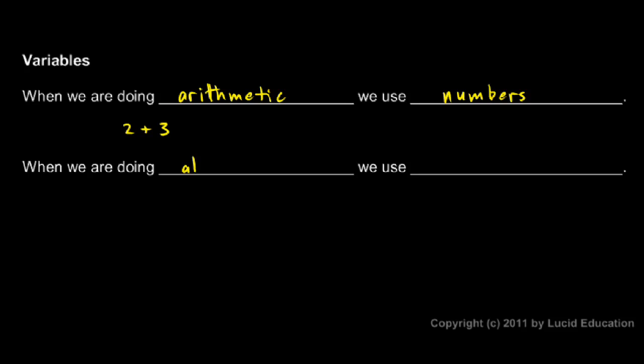When we're doing algebra, we use variables. It's very, very common in algebra to have variables instead of numbers, or in addition to numbers. So, instead of 2 plus 3, we might have x plus y, and x would have some value, and y would have some value. Each of those variables would represent a number, but we would add them together just like that.